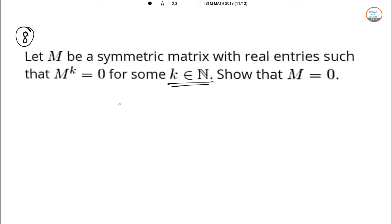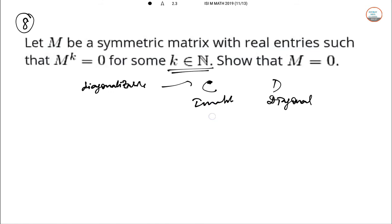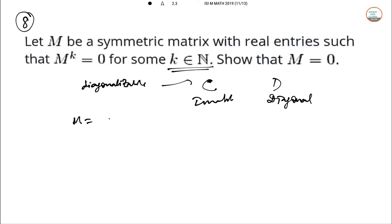A symmetric real matrix is actually diagonalizable, so there exists an invertible matrix C and a diagonal matrix D such that M = CDC⁻¹, and D can be written as diag(λ₁, λ₂, ..., λₙ).